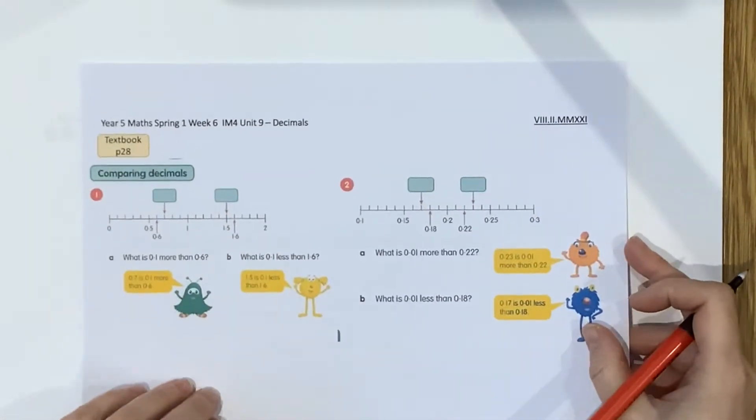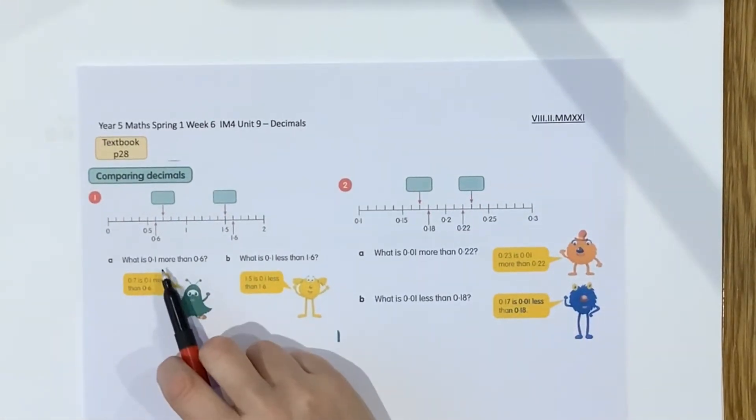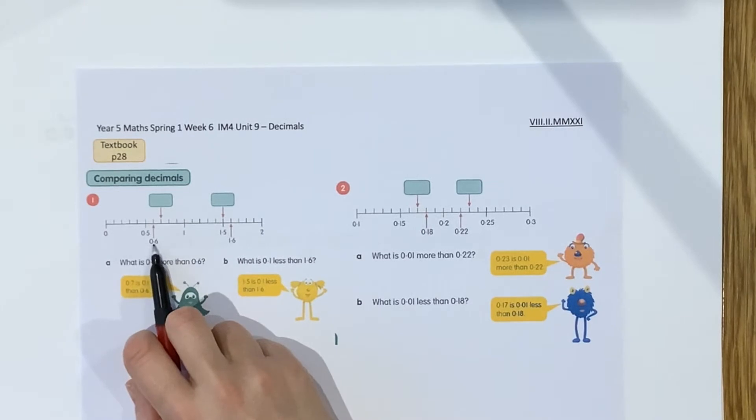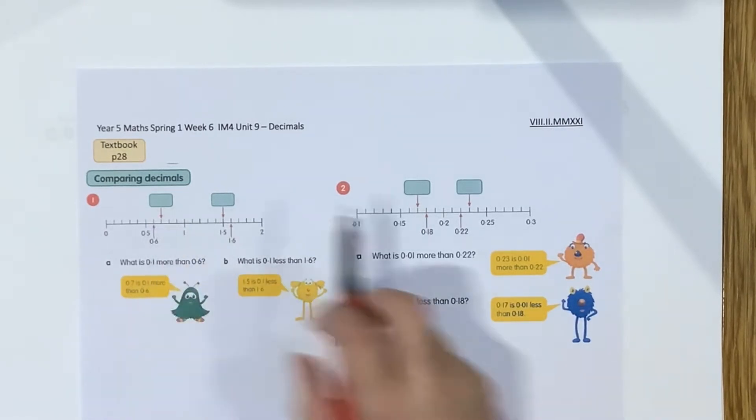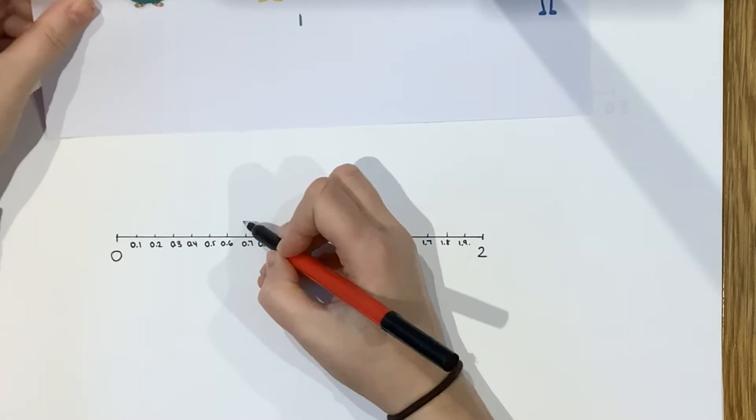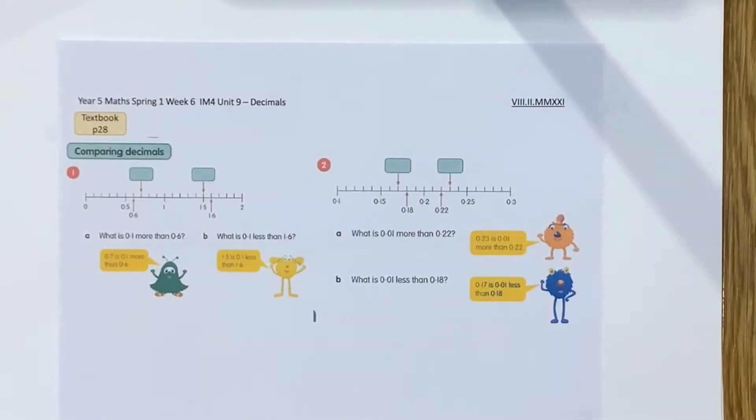Because the number we're looking at is 0.1 today. And then you could actually label all the intervals if you wanted to. 0.1, 0.2, 0.3. So this one is obviously split into tenths. 0.5, 0.6, 0.7, 0.8, 0.9. And remember it's 1. If you want to you can think of it as 1.0. So they've all got the same amount of decimal places. But you don't need to.